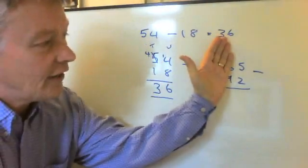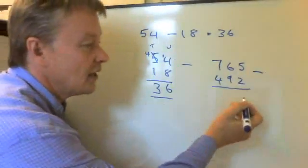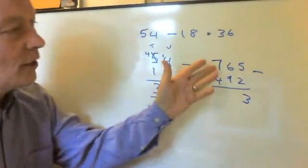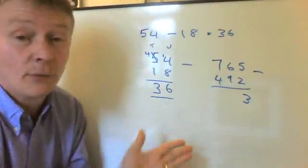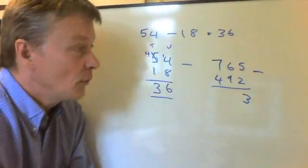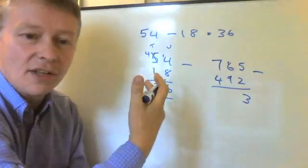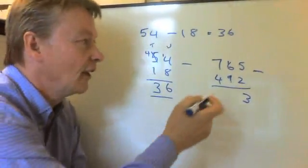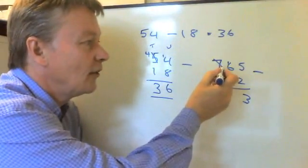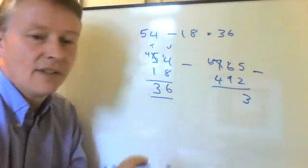So here we have five take away two which is three and then in the middle there I have six take away nine. Well, I can't do that so what I'm going to do is I'm going to make that 16 and because I'm borrowing 10 if you like I now will reduce that to six.